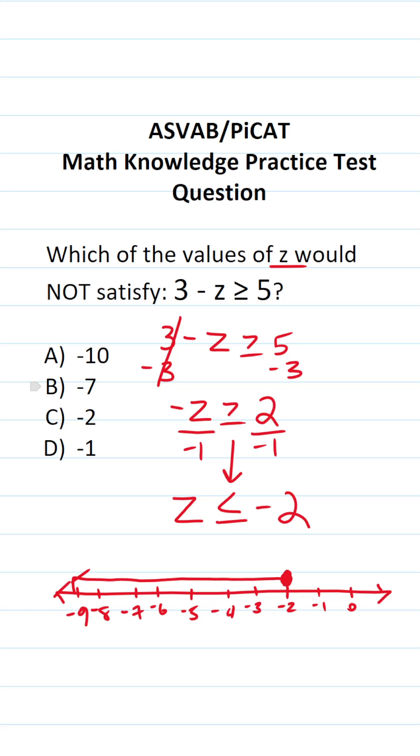Let's take a look at our answer choices. Negative 10 is right here. You can see that it would be under the line, so it does satisfy this inequality.